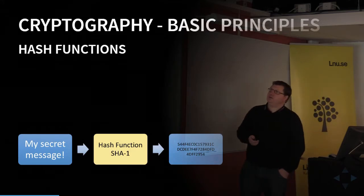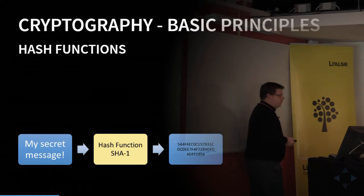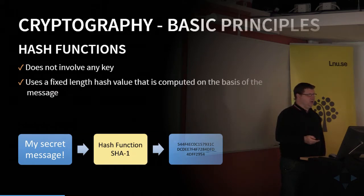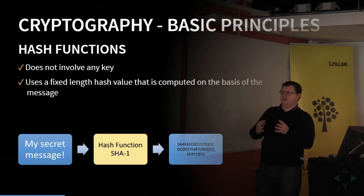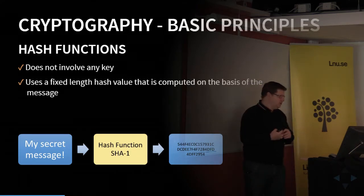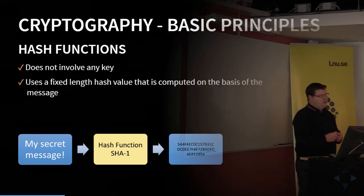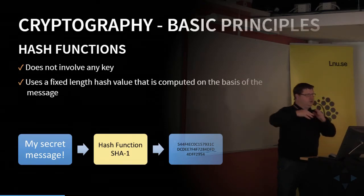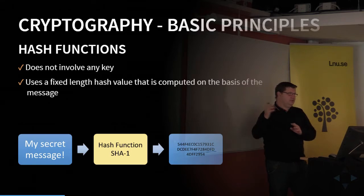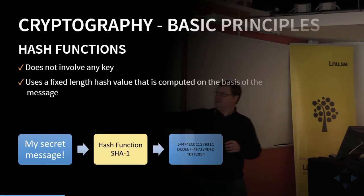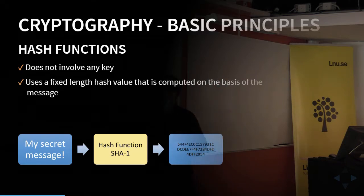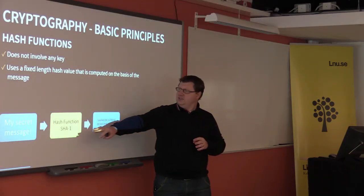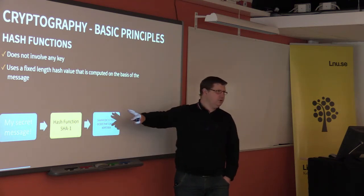Another part of cryptography is hash functions. This doesn't involve any key or any secret — it's just a hashing function. SHA1 is one of these functions. They take a message of any size and convert it to a fixed-length hash. You can't get back the message from the hash, but if you have the message you can run it through the function and get the same hash again. If you use the same hash function, it will always produce the same hash.